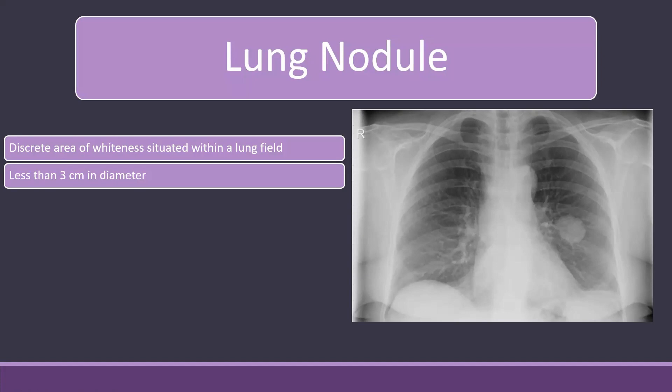Three centimeters in size is called a lung nodule. If it is more than three centimeters, that will be called a lung mass. When there is only one nodule, it is called a solitary pulmonary nodule. If there are more than one, then that is called multiple nodules.